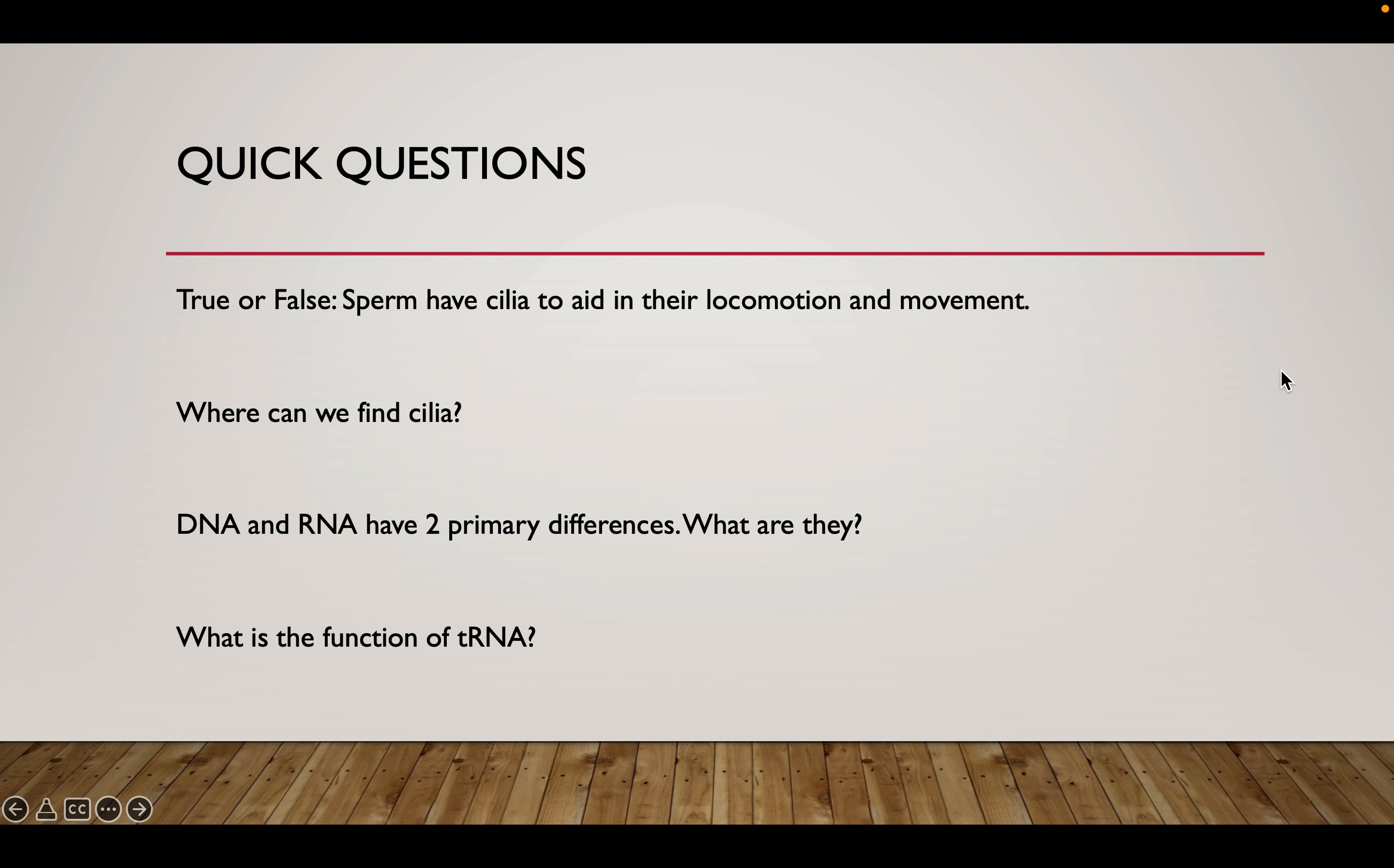So let's answer a few quick questions and we'll be done with this lecture video. So true or false, sperm have cilia to aid in their locomotion and movement. You should recognize this as being false. Sperm have a flagella or a flagellum to aid in their movement.